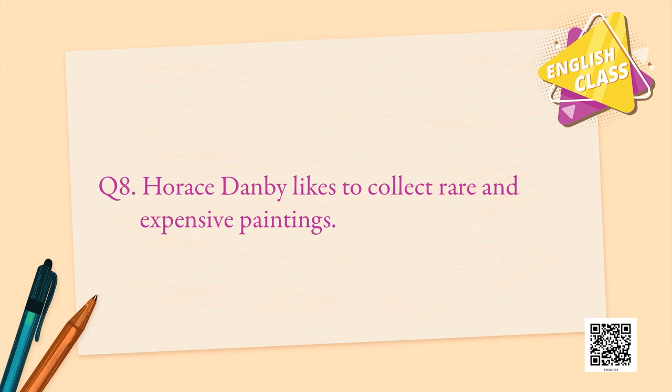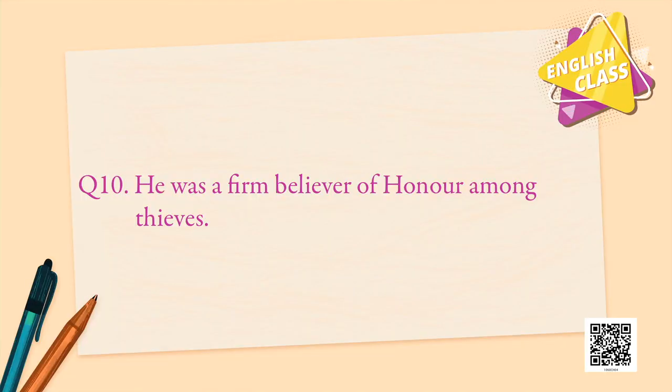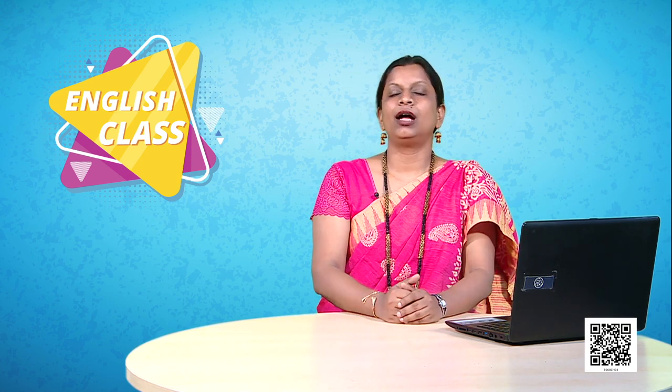Horace Danby likes to collect rare and expensive paintings — false; he likes to collect books. In the end, he reached from where he had begun the journey as a collector of rare books — this is a tricky one. Half the sentence is correct and half is wrong. In the end he did reach from where he began, but in prison. So the answer is false. He was a firm believer of honor among thieves — false, because by the end of the chapter he did not believe in it.